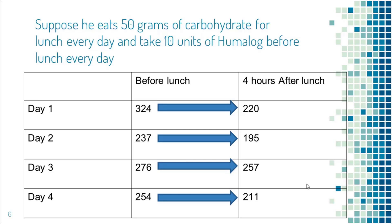In this example, what will be the consequence if he does not change the dose of Humalog for lunch? If one day his blood sugar before lunch is 100 and he still takes 10 units of Humalog, what will happen is he will have hypoglycemia after lunch.